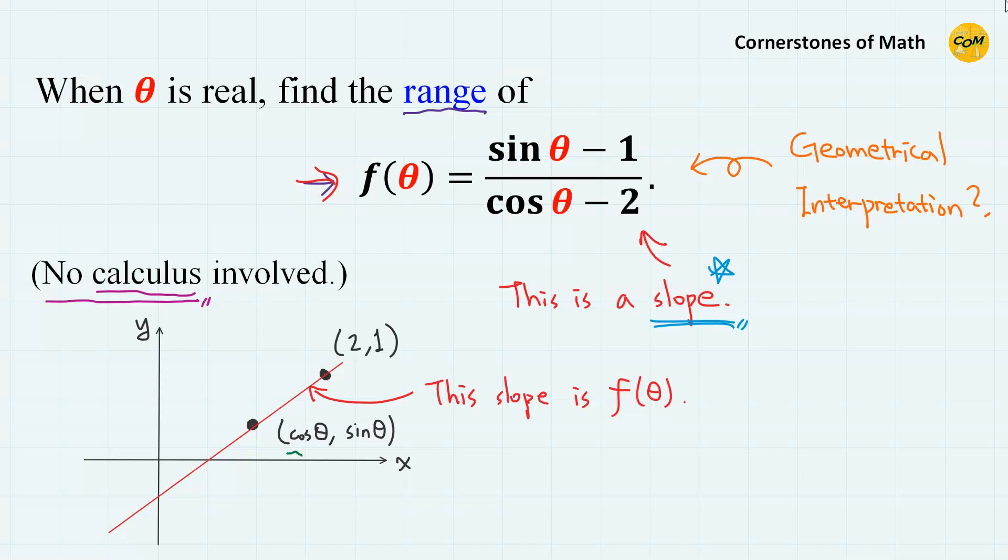Next, let's take a look at this particular point, cosine theta comma sine theta. Obviously, this is a moving point. As theta changes, the point also changes. But this point moves in a special manner.